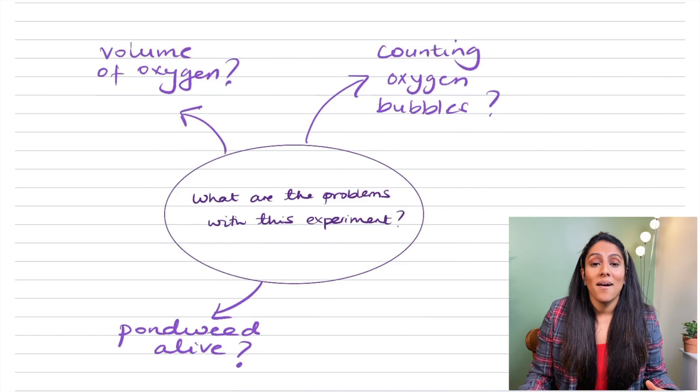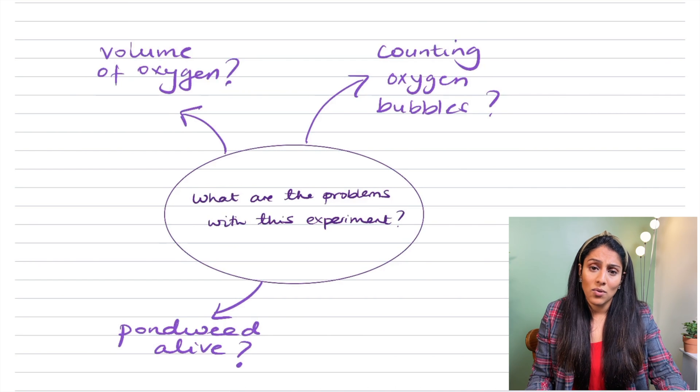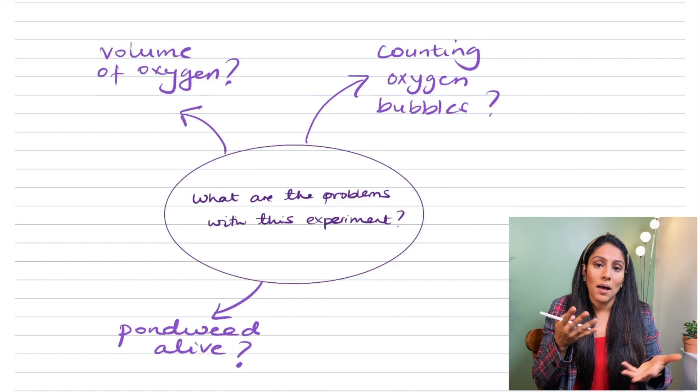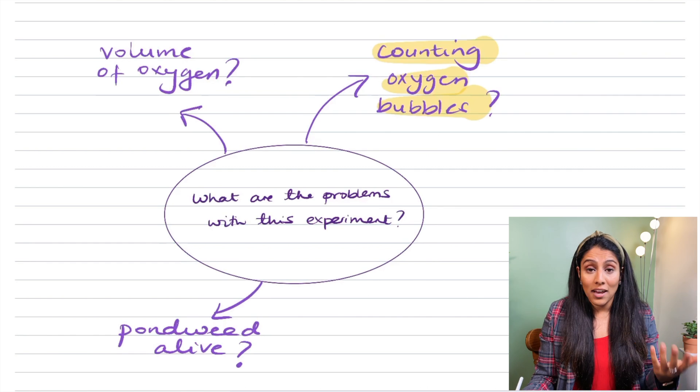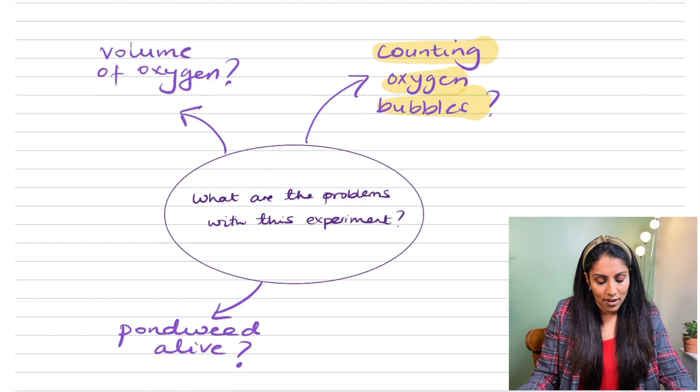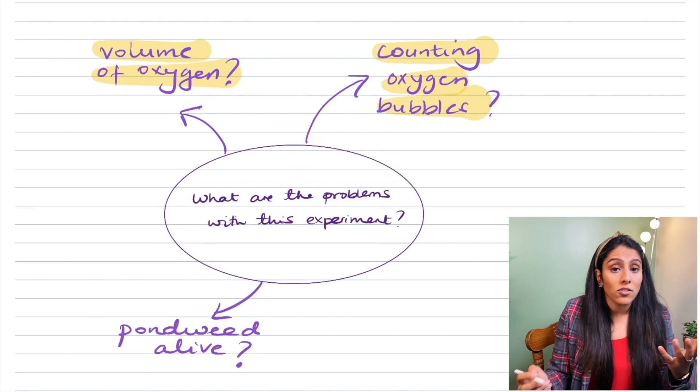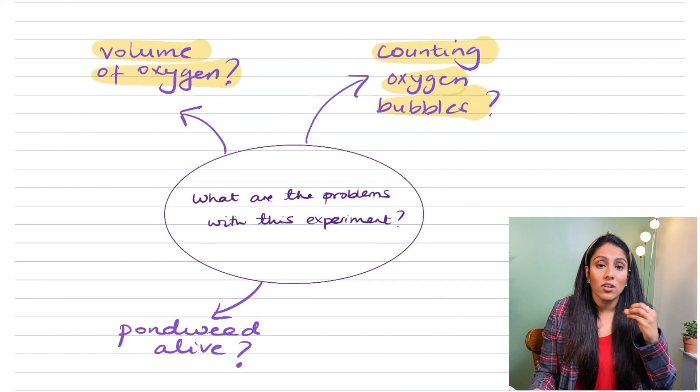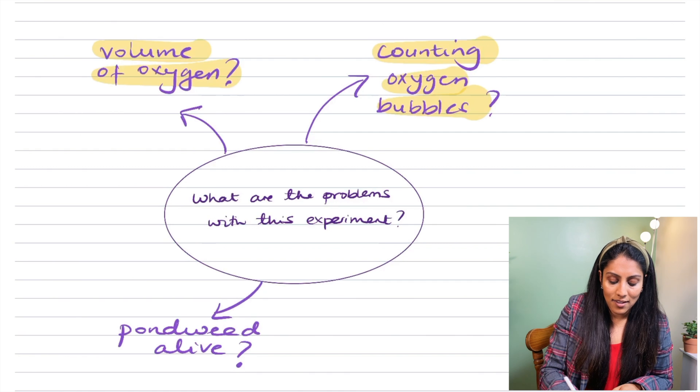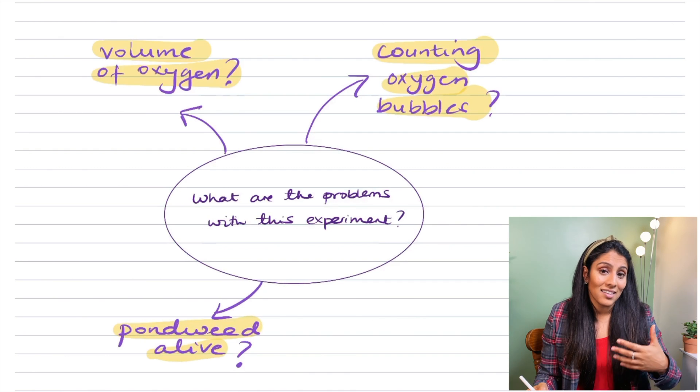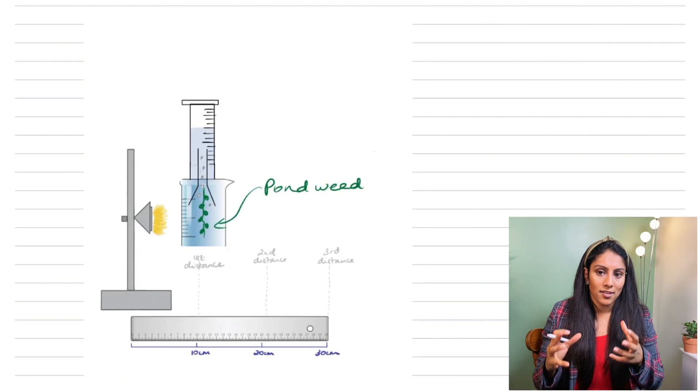So in the exam they might ask you what kind of problems you can see from this method. One thing that is really difficult is to count the bubbles because they can come out really fast. So you can mention that through human error you may not count all the bubbles accurately. The second thing is that the different bubbles might have different volumes of oxygen which means it's not hugely accurate just to count the bubbles by itself. And thirdly because you're looking at a living species you need to ensure that the pondweed is alive in order for it to photosynthesize.